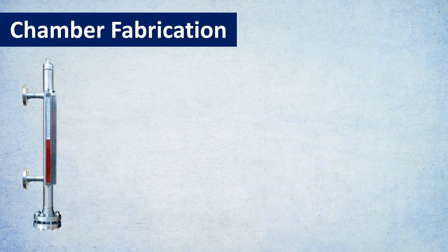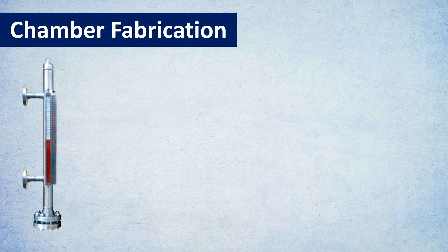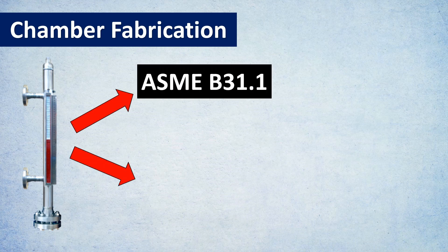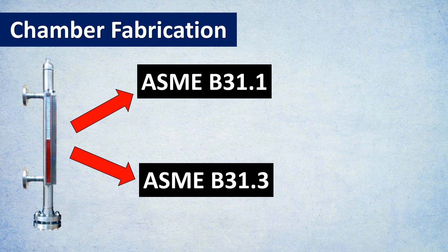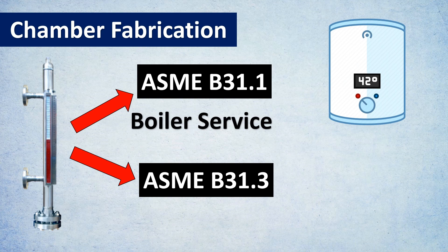The next point is chamber fabrication. Chamber fabrication has two important standards which are usually used: ASME 31.1 and ASME 31.3. What is the difference? Usually in boiler services you would have 31.1, and in process applications you would usually have the chamber fabricated as per 31.3.